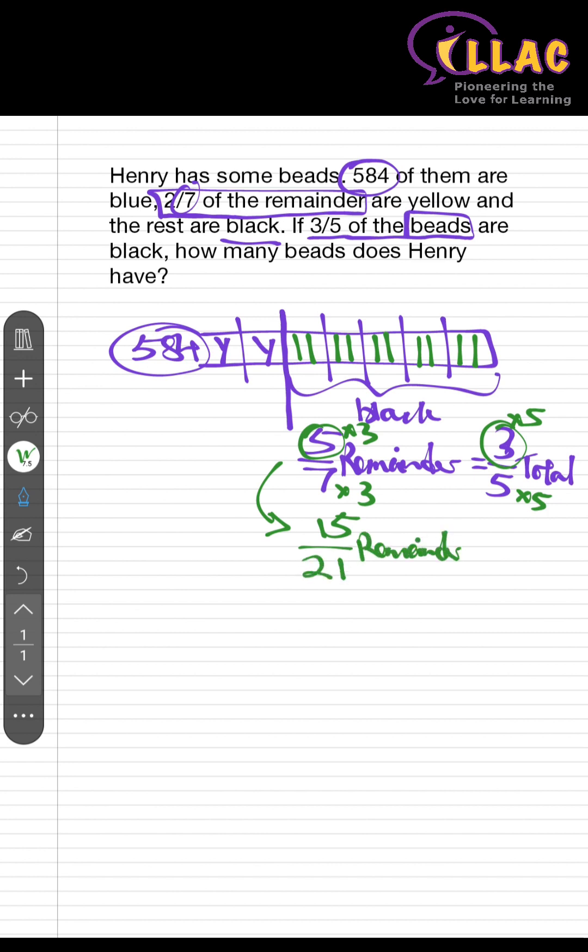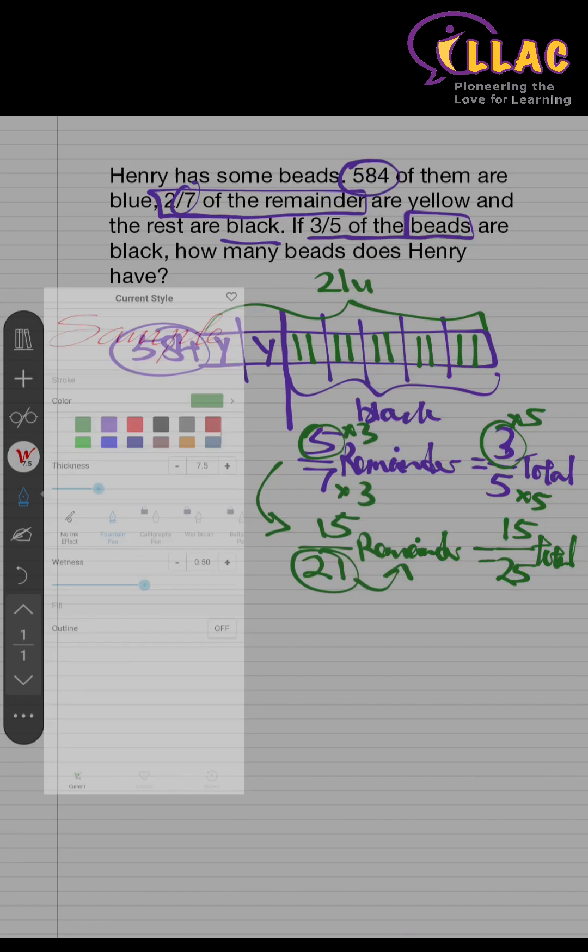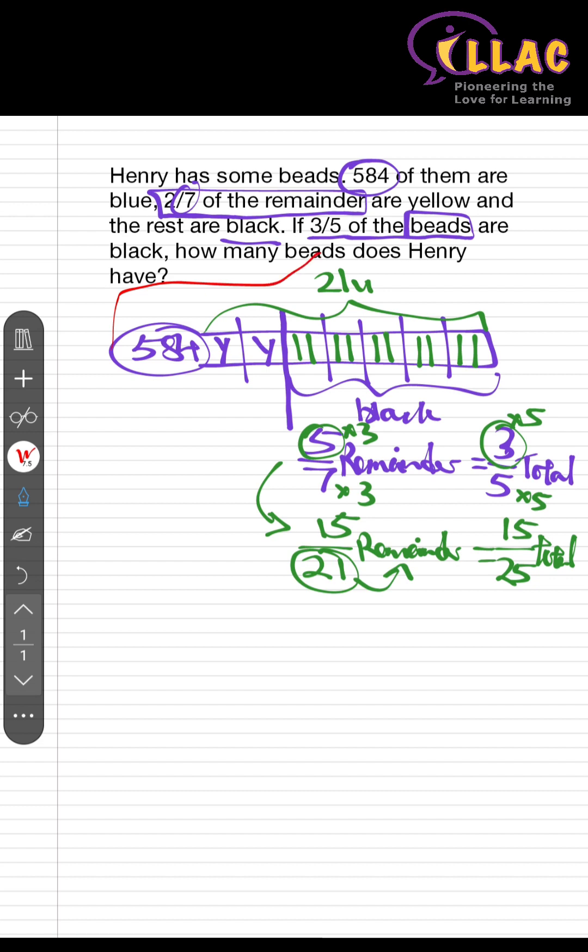At this point, you should be very clear that 21 represents the total number of remainder, which is from here to here is 21 units. And 15 over 25 represents the total, which means the whole thing from here will represent 25. If that is 25 and this is 21, what does that tell you about 584? That will be 4 units. Where do I get 4 units from? 25 units minus 21 units is 4 units.